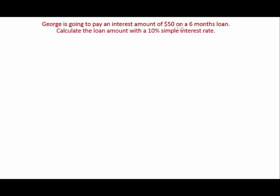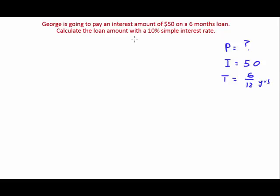Let's go through another example. George is going to pay an interest amount of $50 on a six-month loan. Calculate the loan amount with a 10% simple interest rate. Let's write out our variables: the principal is unknown so let's put a question mark, the interest amount is $50, the time is 6/12 years, and the interest rate is 10% per annum.